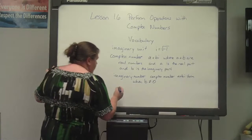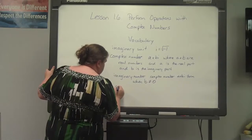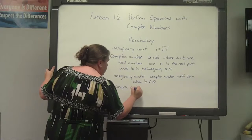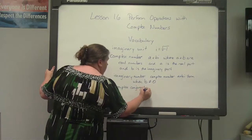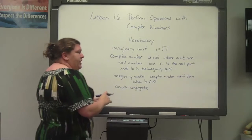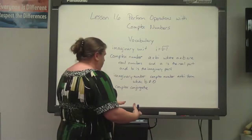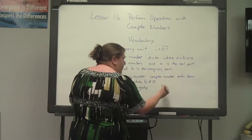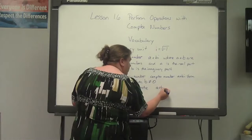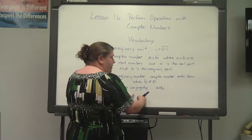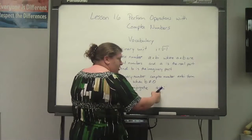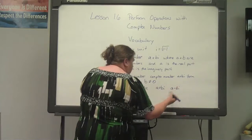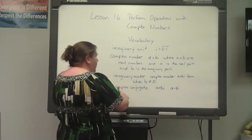The next term is a complex conjugate. A conjugate is simply the opposite operation. For a complex conjugate, if we have a plus bi, we change the operation from addition to subtraction, giving us a minus bi. And that is a complex conjugate.